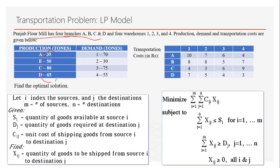The values given are the supply, or capacity constraints. Branch A can produce a maximum of 35 tons of flour, Branch B can produce 50 tons, and similarly for C and D. We are also given the demand for each zone, and the transportation cost per unit — for example, from Branch A to demand zone two, and so on.